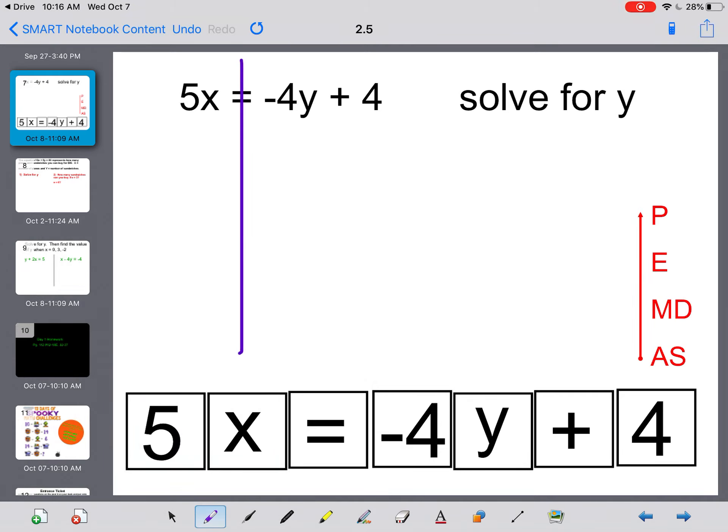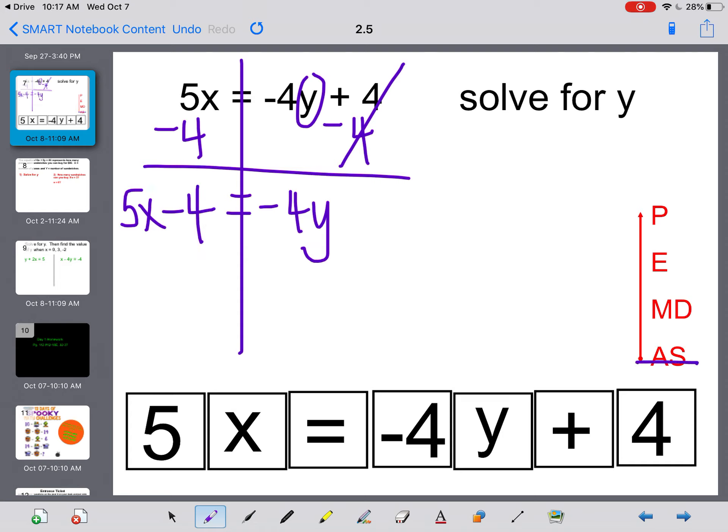Again, solving for y, feel free to move the blocks if that will help you. This is the letter I want alone. So if I'm looking for adding and subtracting, the number that's being added on to the term with the y is this 4. So we want to get rid of this 4 by subtracting it. That is the inverse. That leaves me with a negative 4y on the right and 5x minus 4 on the left, since those are not like terms.